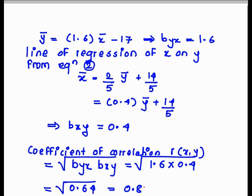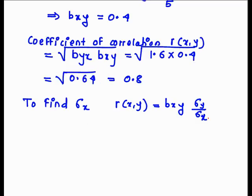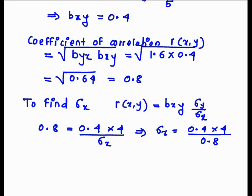Now we want to calculate sigma x. r(x,y) equals b_xy times sigma y upon sigma x. We substitute the values of r, b_xy, and sigma y, so we get 0.8 equals 0.4 times 4 upon sigma x. That implies sigma x equals 0.4 times 4 upon 0.8, which gives sigma x equals 2.